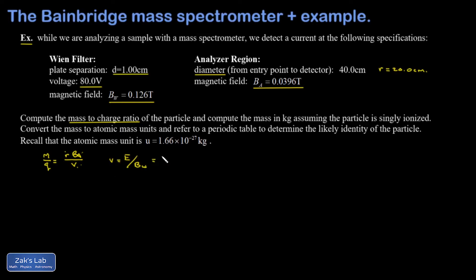Now remember, electric field can be measured in volts per meter. I just take the voltage and divide by the separation between the plates. So that's a capital V over D divided by BW.